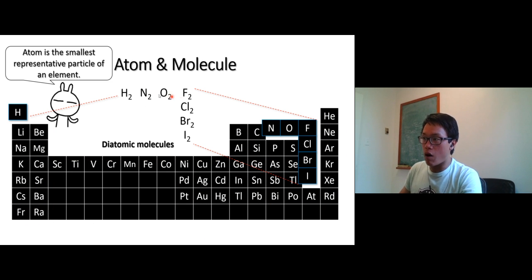Some of them exist in pair. We have hydrogen gas, nitrogen gas, oxygen, fluorine, chlorine, bromine, iodine gas. So we call diatomic molecules. Actually, bromine exists in a liquid form and iodine exists in a solid form. They are diatomic molecules.